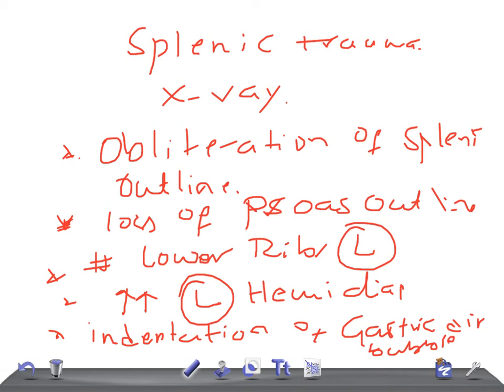So to summarize, the important X-ray findings for splenic trauma are: obliteration of the splenic outline — that's the best sign — loss of the psoas outline, lower rib fracture on the left side, raised left hemidiaphragm, and indentation of the gastric air bubble. If you find these, think splenic trauma. Thank you so much for watching, take care.